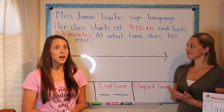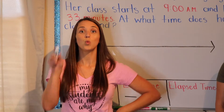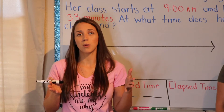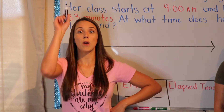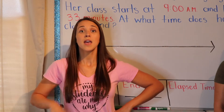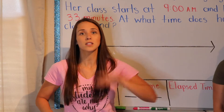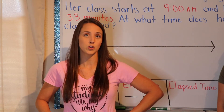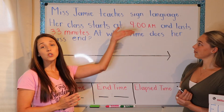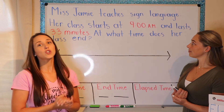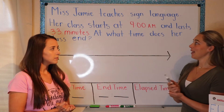At what time does her class end? I teach my students three very important things. First, we circle all of the numbers in our problem. Second, we underline important information. And third, we write a nice big star — that means stop. That's important, and it could change your answer if you do not stop and read what it's asking you. Ms. Jamie, you think you can give it a shot? Ms. Jamie teaches sign language. Her class starts at 9 a.m. What should we circle — 9 a.m.? Why? Because it's a time.